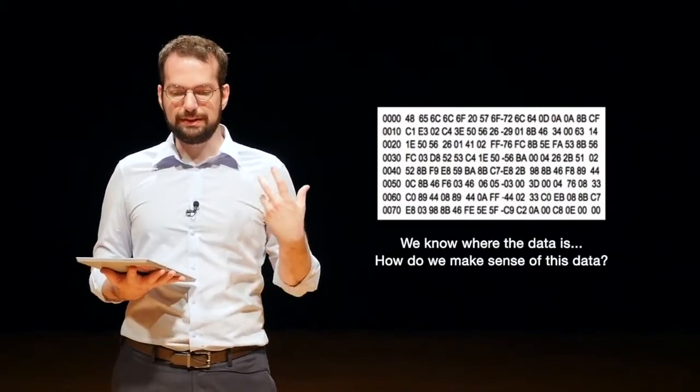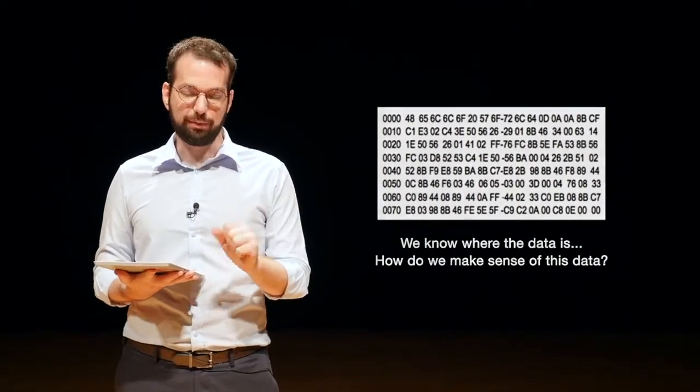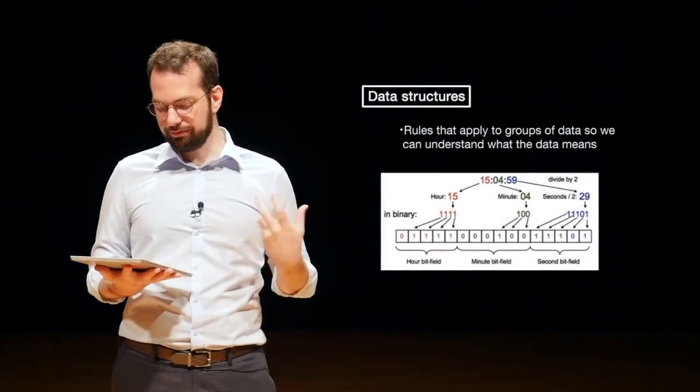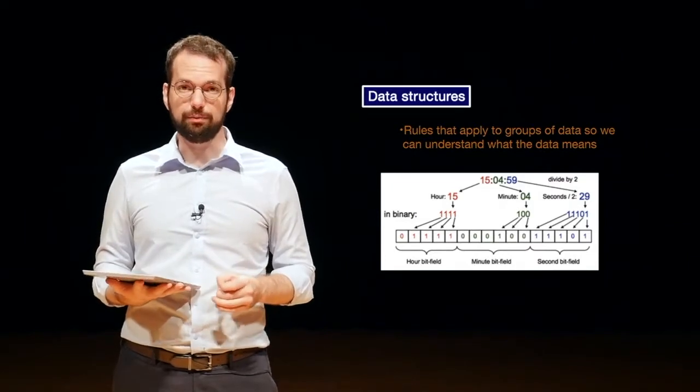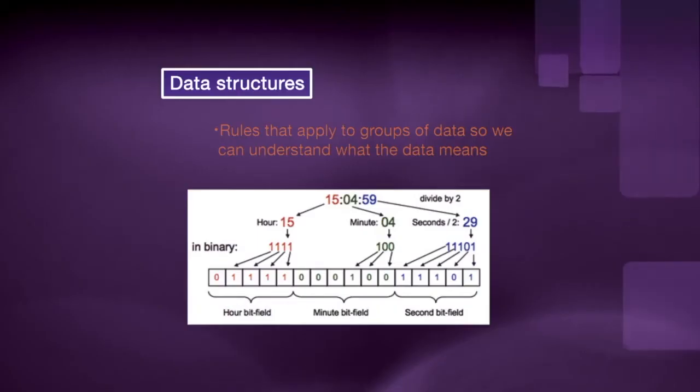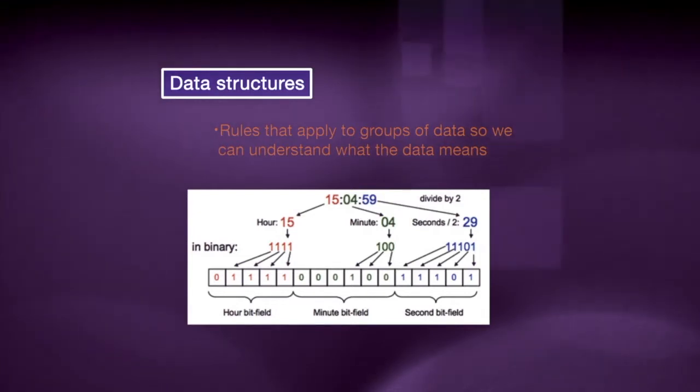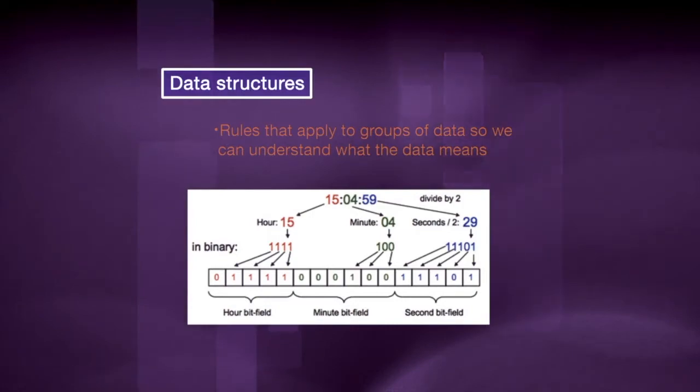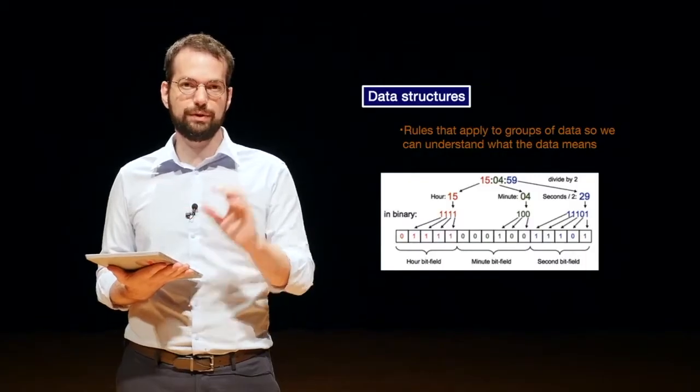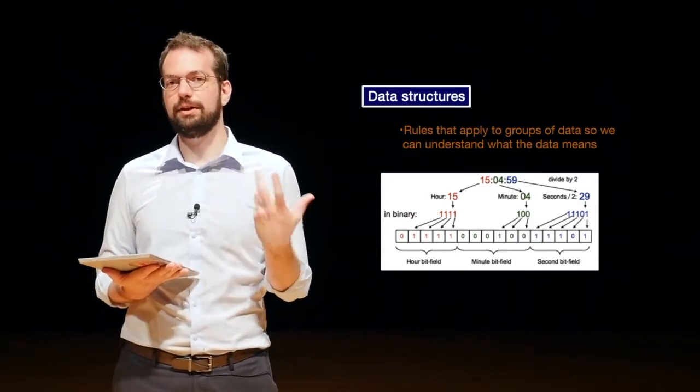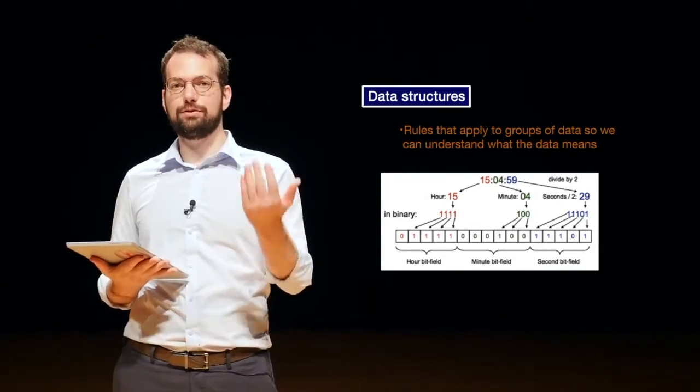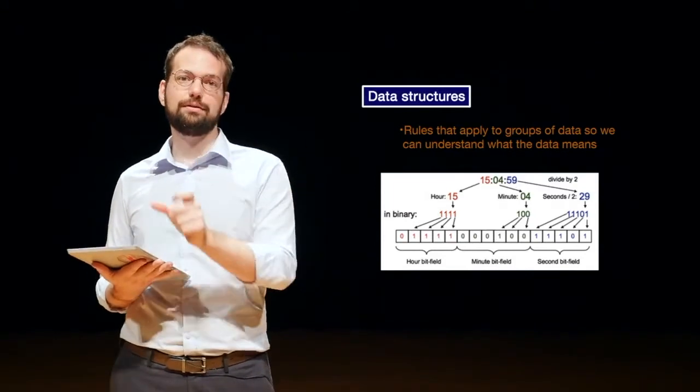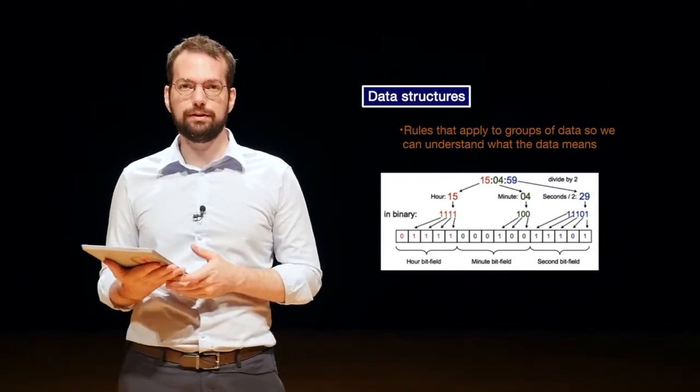So whenever we're talking about data, we want to figure out what this data actually represents, and we want to do that accurately. Data structures are essentially rules that apply to groups of data so we can understand what this data actually means. I essentially have ones and zeros, a binary string. And if we know what the data structure is for those ones and zeros, we can split them up, and we can actually pull out a timestamp. This is a very common way to save timestamps on a computer.